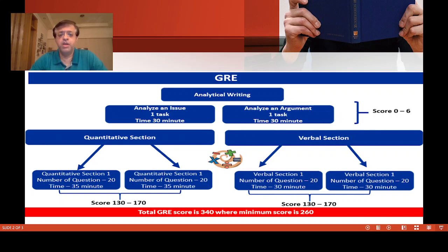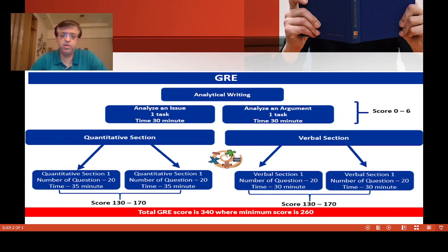When you register for GRE, you will pick a center where you take your exam. At the center you are assigned a computer where you spend around four hours doing your GRE test. In the Analytical Writing section you type two essays: one is called Analysis of an Issue essay, for which you are given 30 minutes.